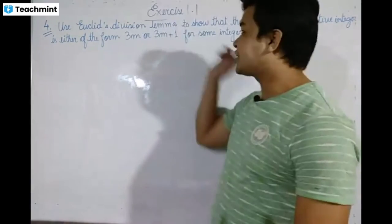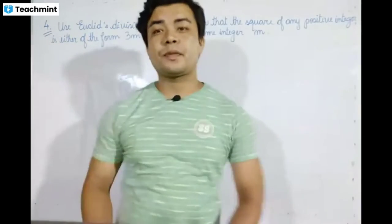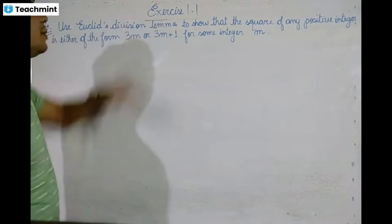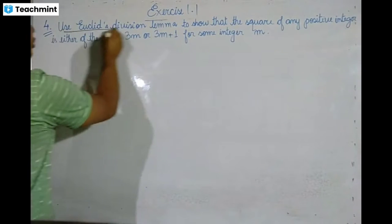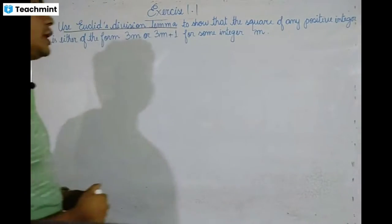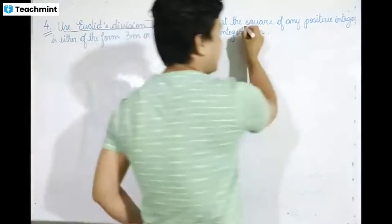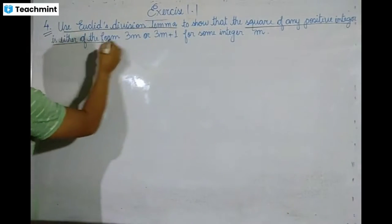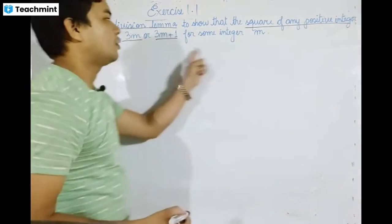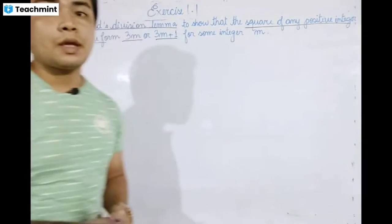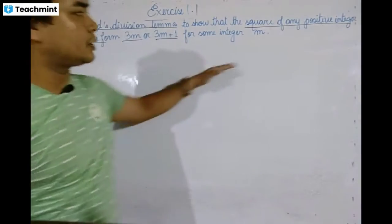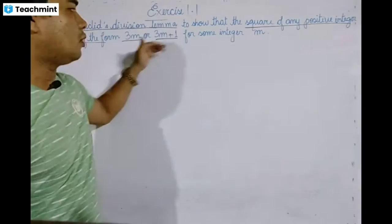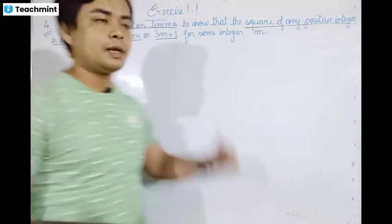We will be doing exercise 1.1, question number four. Question number four states: use Euclid's Division Lemma to show that the square of any positive integer is either of the form 3m or 3m plus 1 for some integer m.